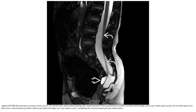Of the sacrum. In this case, the spinal cord is abnormally low-lying with caudal extension of the attenuated cord through a sacral dysraphism. The terminal spinal cord reaches into the sac of the terminal myelocystocele, which is on the right side, completing the terminal myelocystocele malformation.